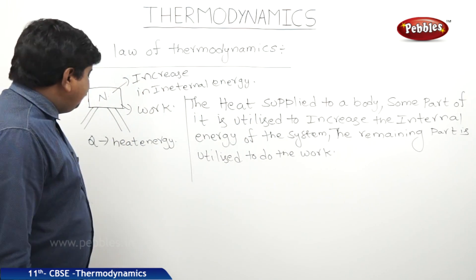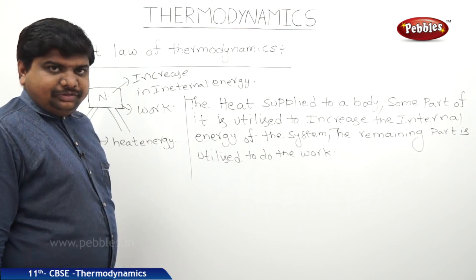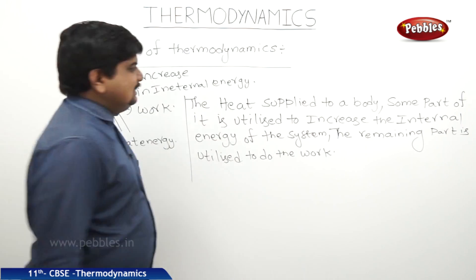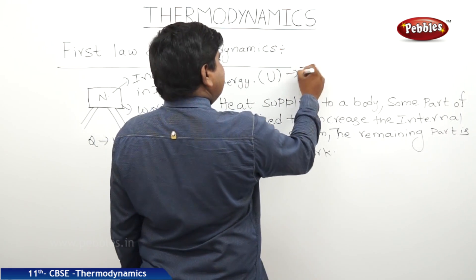Let us suppose the amount of heat energy supplied to a body or system is called DQ. Increase in internal energy, let us suppose the symbol for the internal energy is U, where U is internal energy.